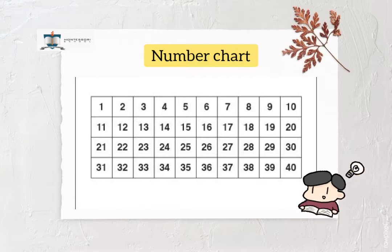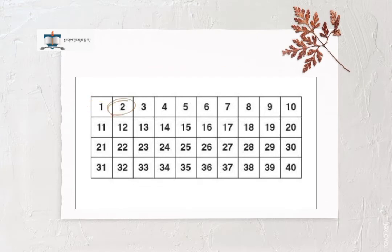Now, let's count together with me. 1 2 3 4 5 6 7 8 9 10 11 12 13 14 15 16 17 18 19 20 21 22 23 24 25 26 27 28 29 30 31 32 33 34 35 36 37 38 39 40.